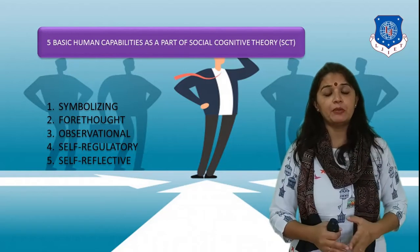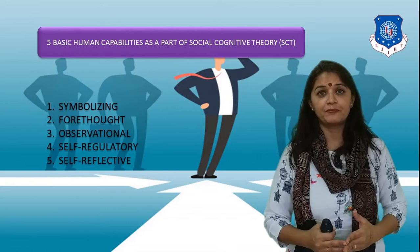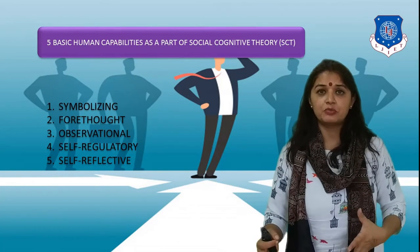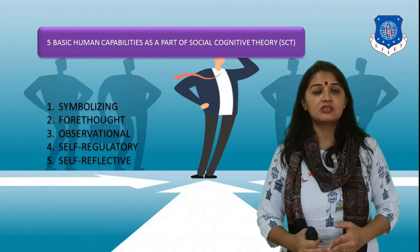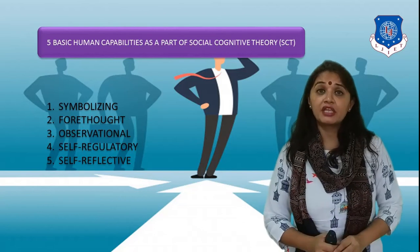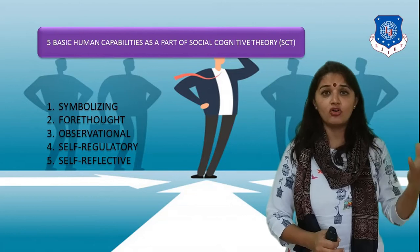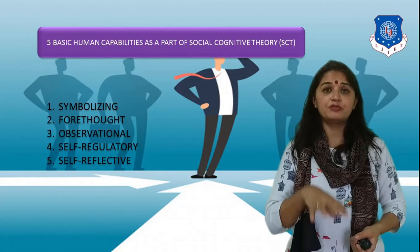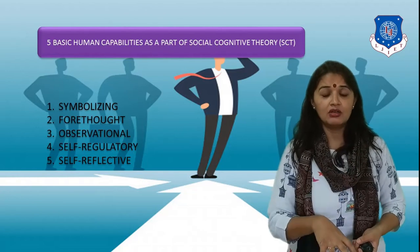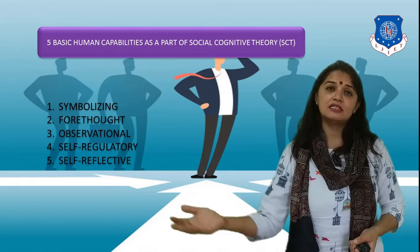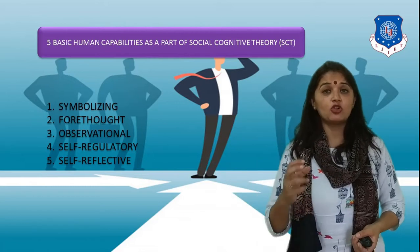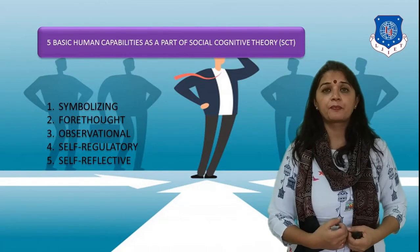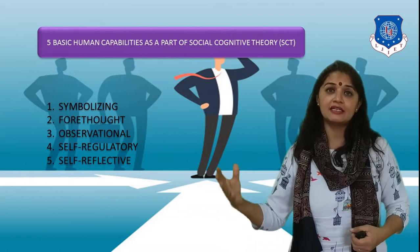The fourth capability is self-regulatory. Every human being has their own morals, values, and principles. Based on these, the person behaves in a certain manner. Given a particular past experience, stimulus, or desired consequence, if the action doesn't fit into one's self-principles or morals, then the person will still not behave to get that desired result. Self-regulatory is important because a person independently regulates their behavior despite the fact that they may get a desired outcome.